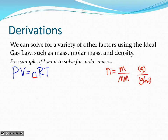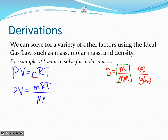Since moles = mass/molar mass, we substitute that into PV = nRT. We get PV = (mass × RT) / molar mass. Rearranging variables — flipping molar mass and volume with pressure — gives us: molar mass = mRT / PV.